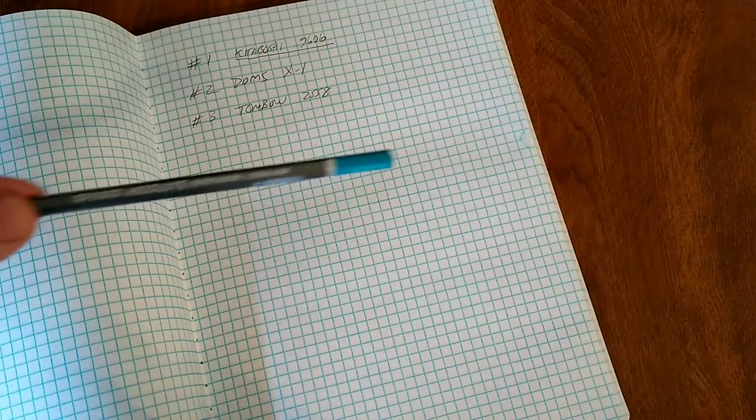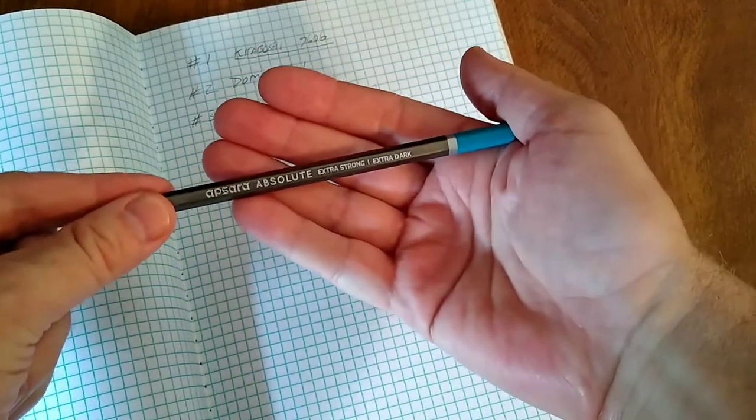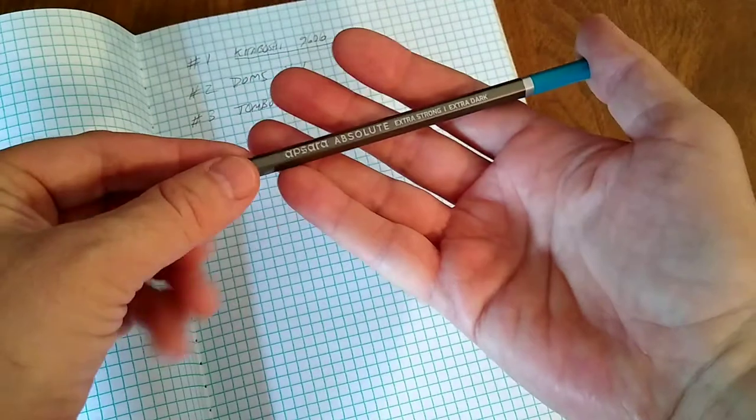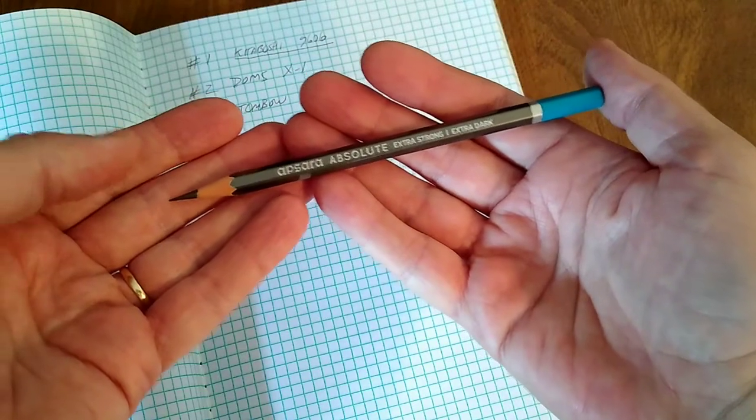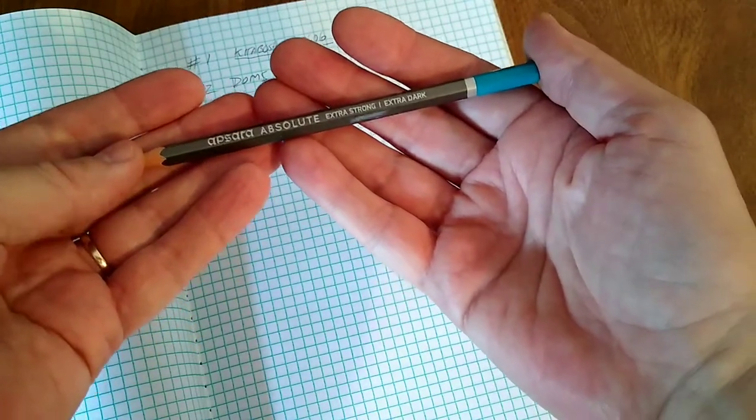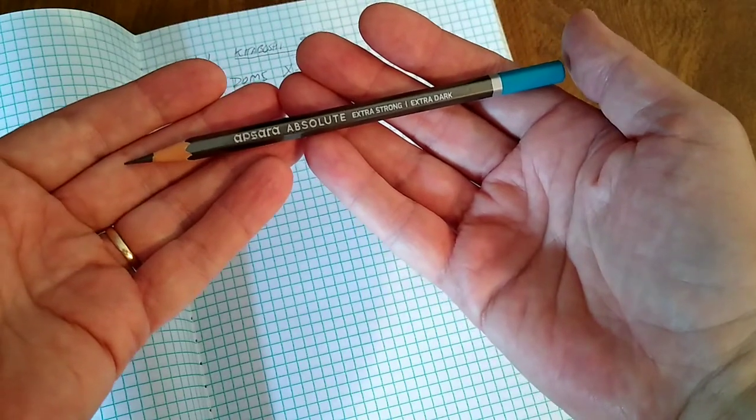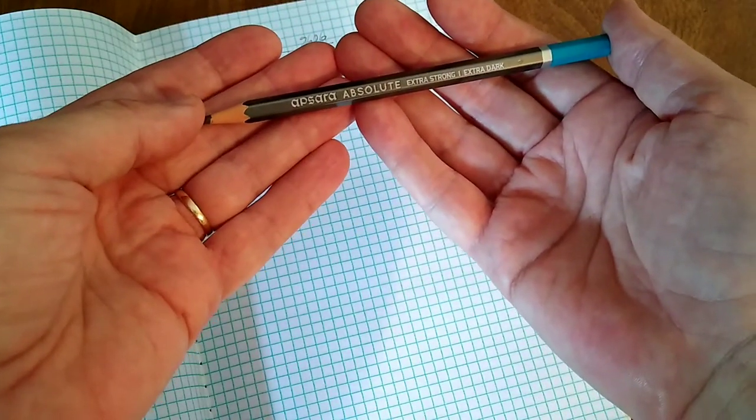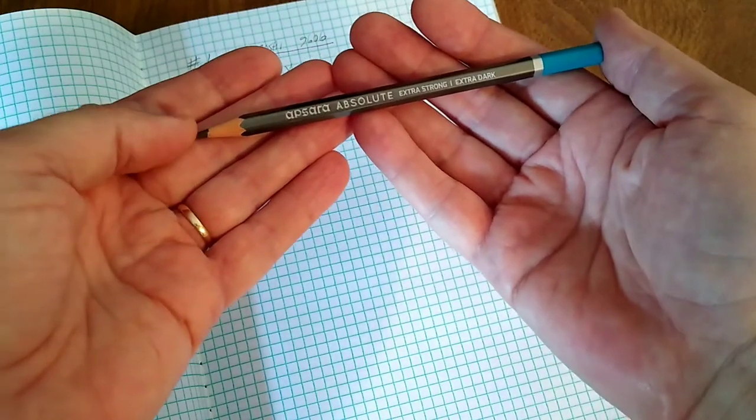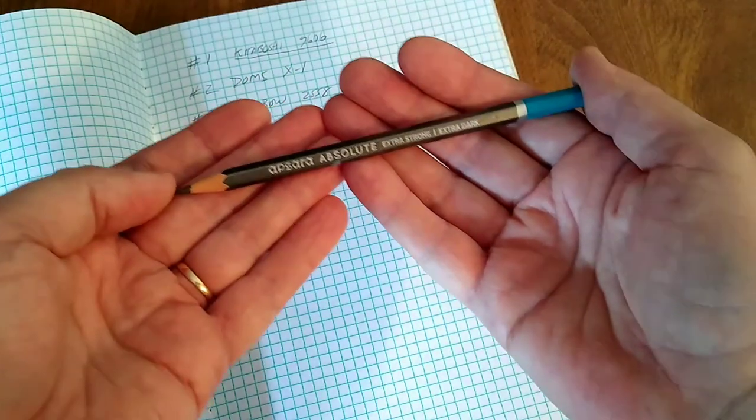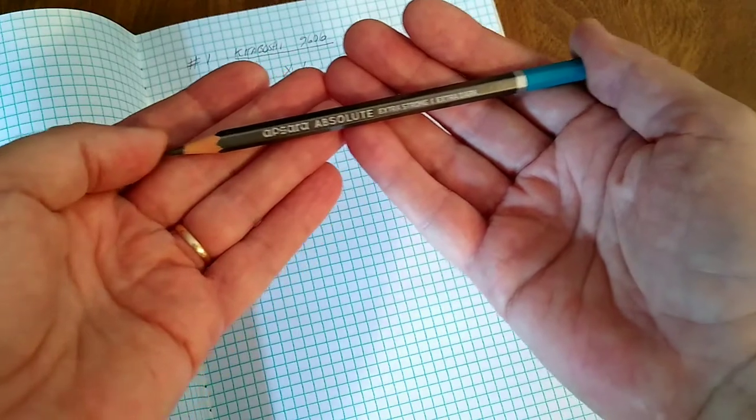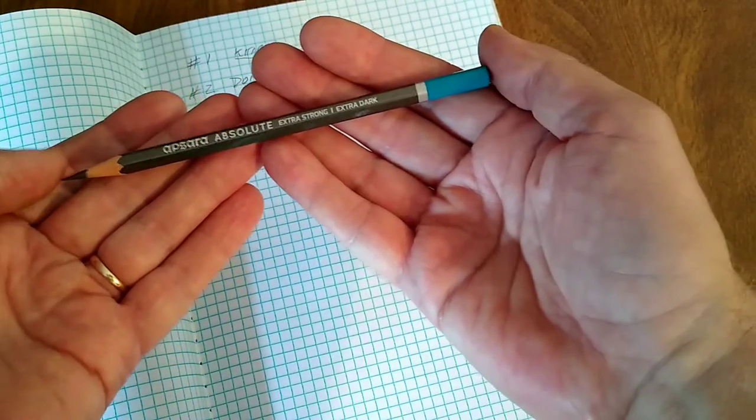Number four, this one comes again from Asia, from India. So the second pencil from India, and the top four spots belong to Asia, which again, for me personally, dark graphite is what I look for in writing pencil, and Asia is best at that in general. So what we have here is from the Apsara company, part of Hindustan Pencils that also makes Nataraj pencils that are also very nice. This Apsara Absolute, extra strong, extra dark pencil.